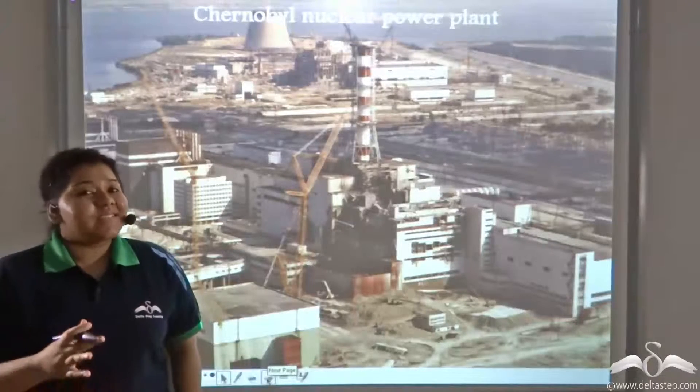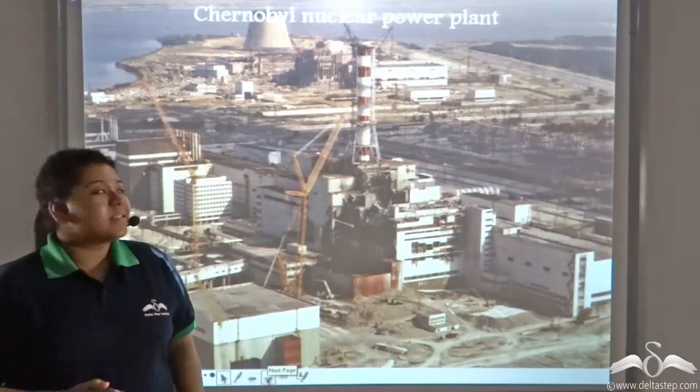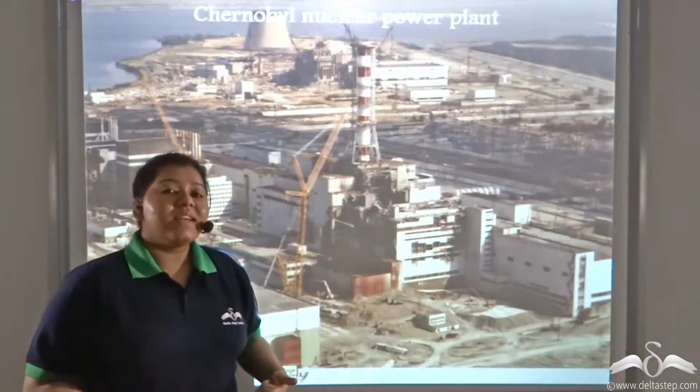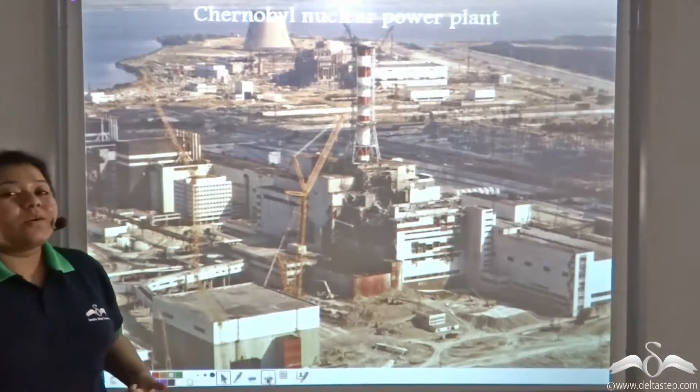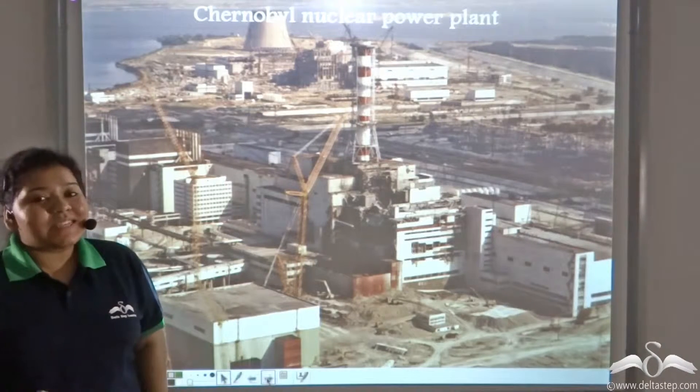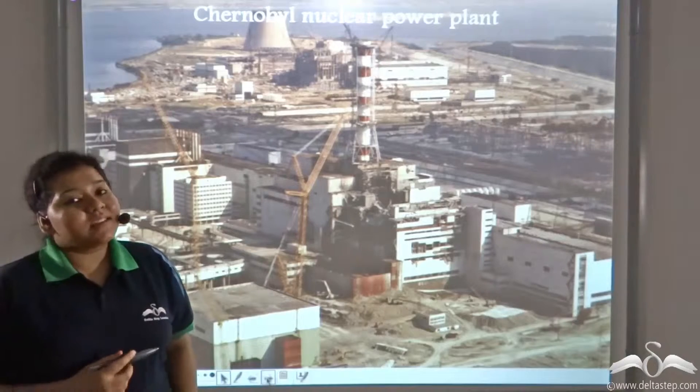On 26th April 1986, Chernobyl nuclear power plant in Ukraine suffered a meltdown that released many poisonous radioactive materials in the air and in the soil.